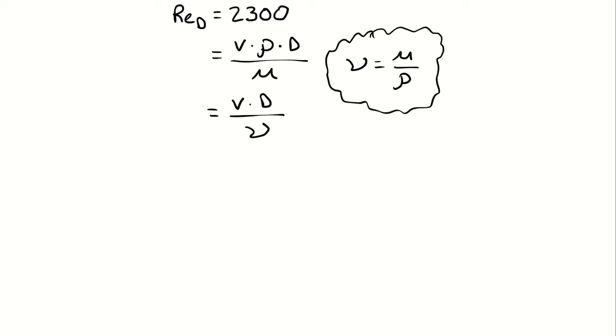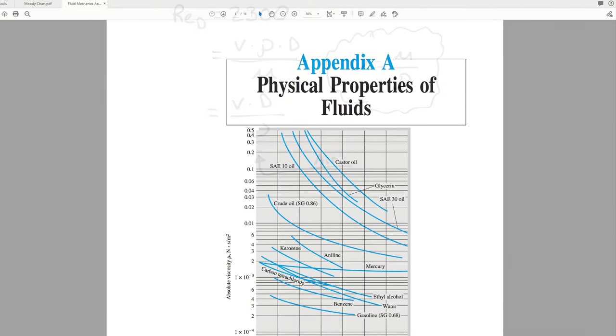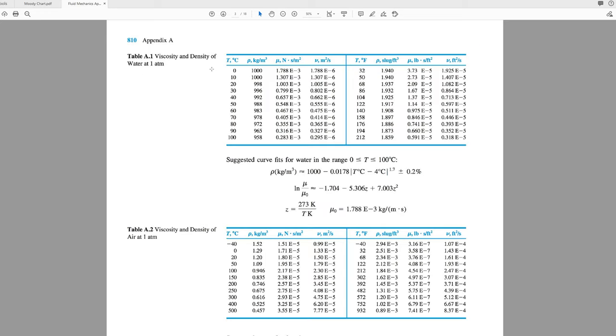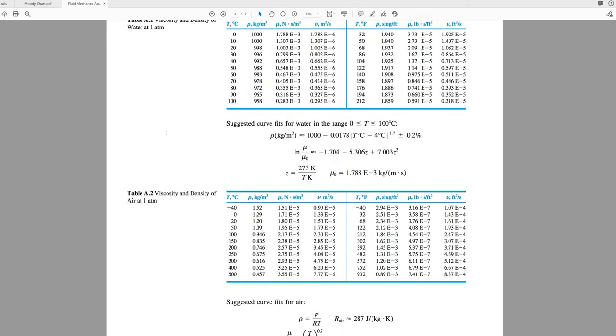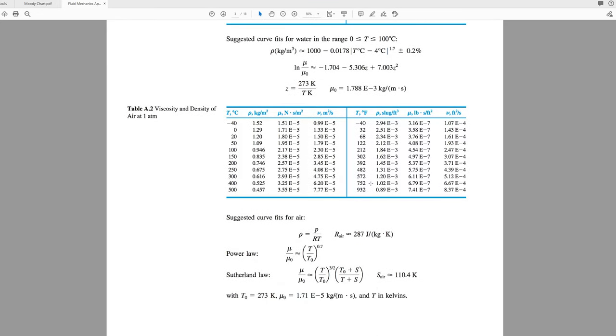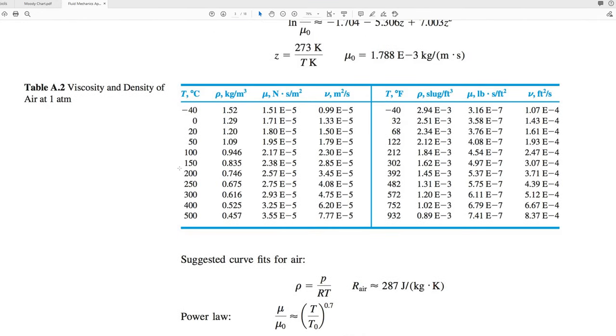When we're talking about the properties of air, we need to jump into our appendices, and the relevant table is going to be table A2, which contains properties including density, dynamic viscosity, and kinematic viscosity for air at a variety of temperatures.